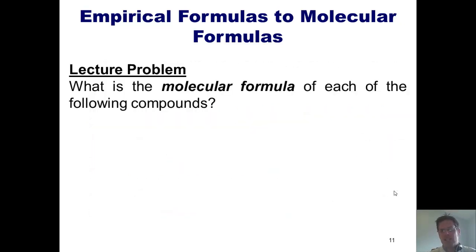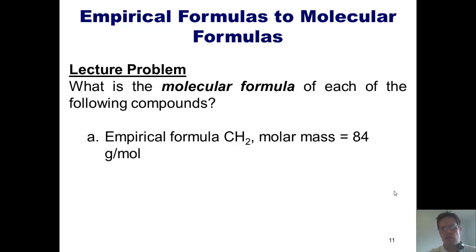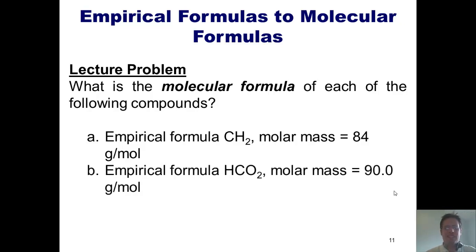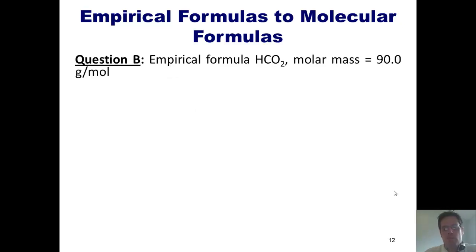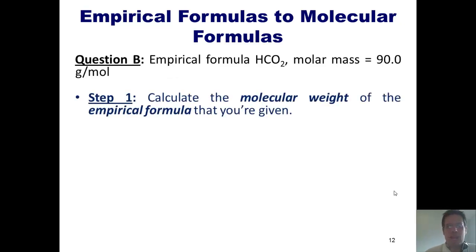In this problem, I'm asked, what is the molecular formula of each of the following compounds? A is a compound whose empirical formula is CH2 and molar mass is 84 grams per mole. And B, empirical formula HCO2 and molar mass is 90 grams per mole. Now, I'm not going to do A for you. I'll let you tackle it on your own, but I will do part B as follows. Remember, step one, calculate the molecular weight of the empirical formula we're given. Our empirical formula is HCO2. What is its molecular weight? Well, hydrogen weighs 1, carbon weighs 12, and O2 weighs 32, because each oxygen weighs 16, and there are two of them. 1 plus 12 plus 32 equals 45 grams per mol.